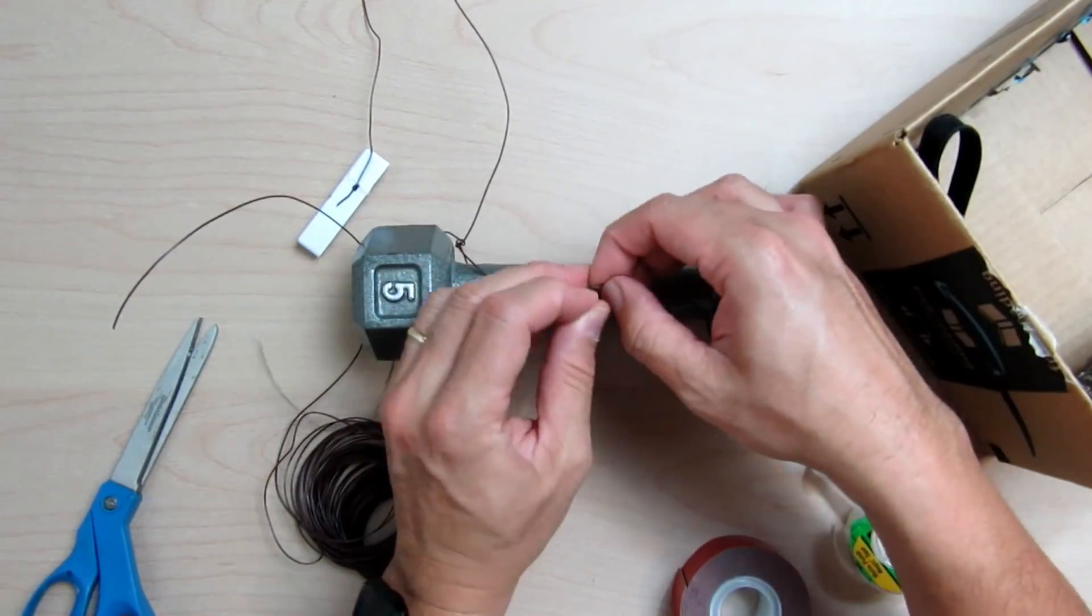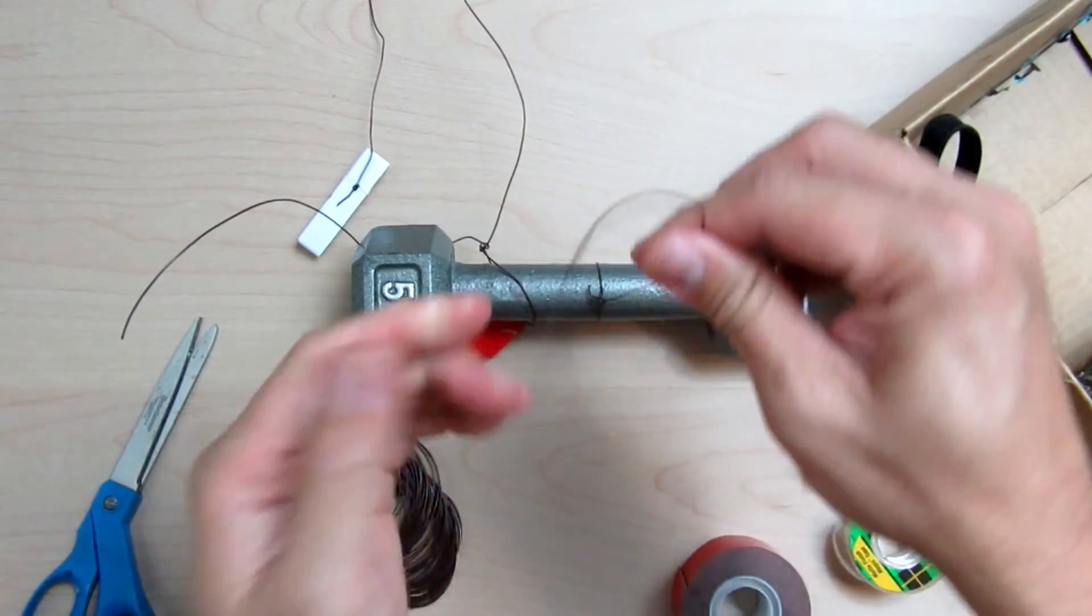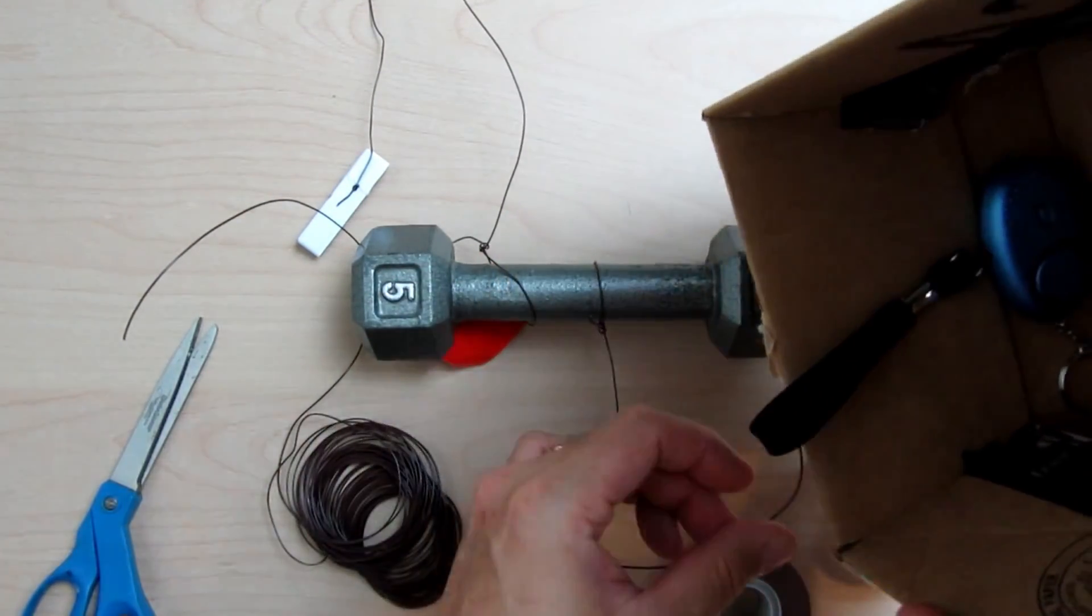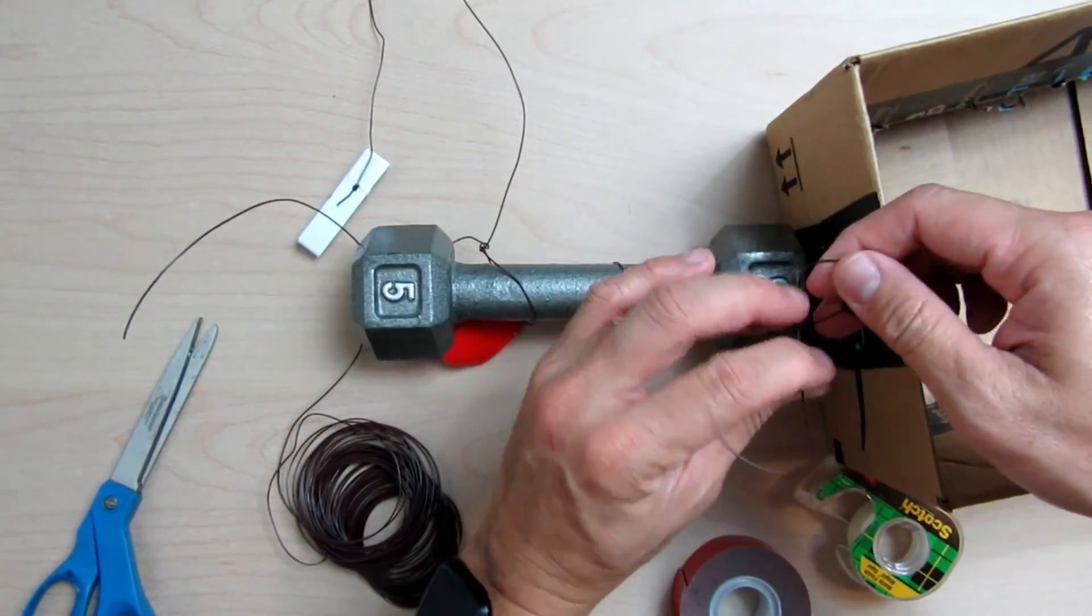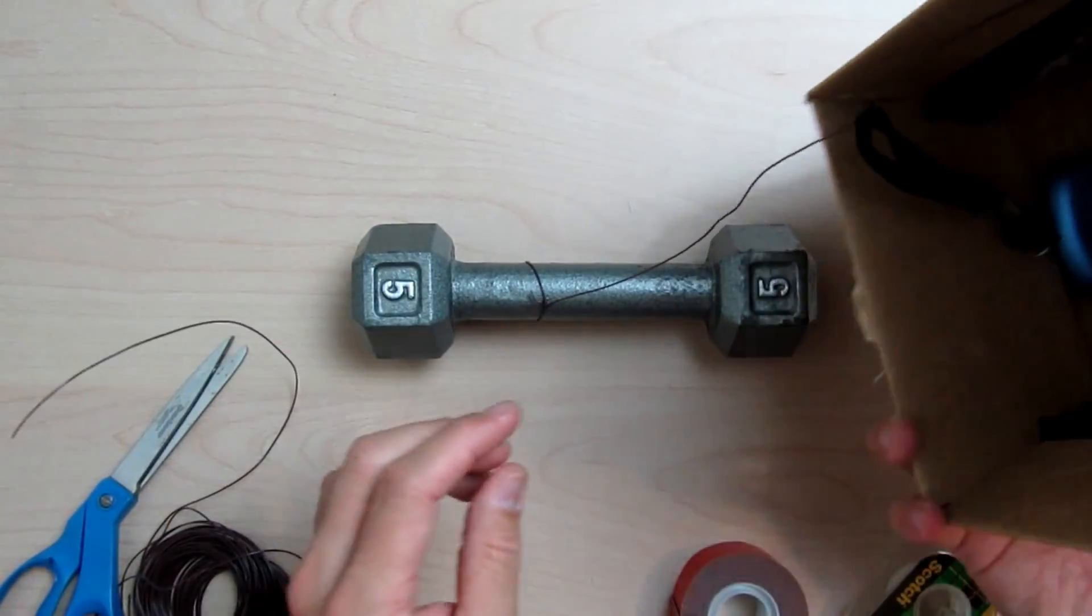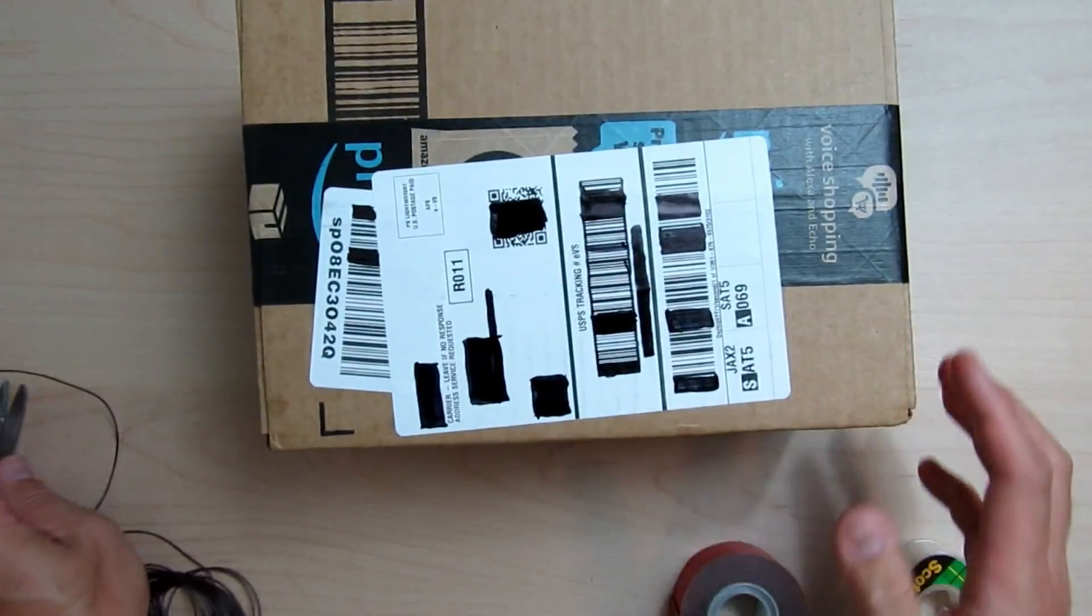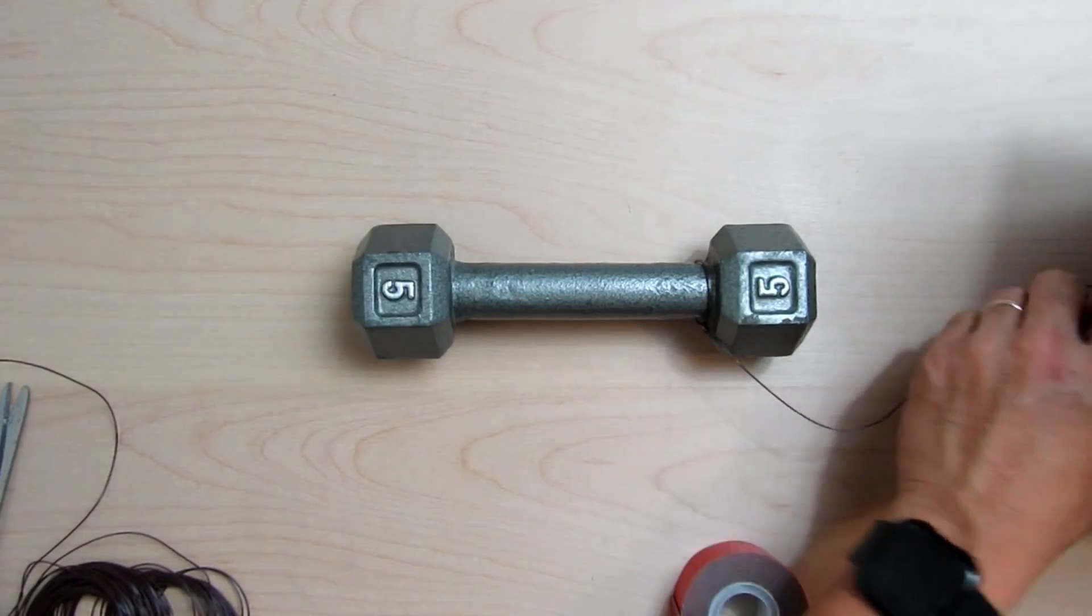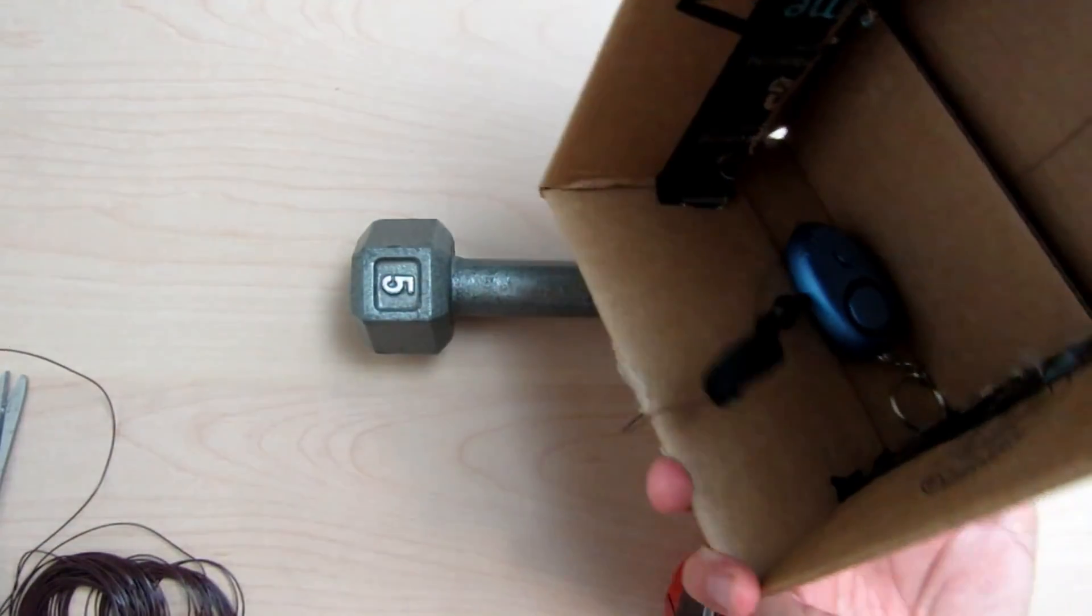Cut your trip wire and tie one end to your anchor weight and the other end on the pull pin. Now let's try this out. It works.